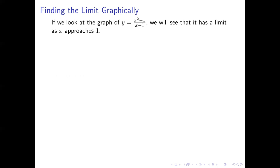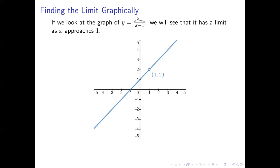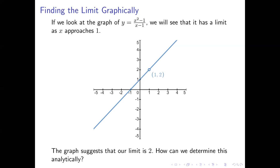Let's take a look at that limit graphically. The function is y equals x squared minus 1 over x minus 1, and we want the limit as x approaches 1. There's the graph — notice that the point 1, 2 is not on the graph because the function is undefined when x equals 1. But as we get closer and closer to where x equals 1, the y coordinates are getting closer and closer to 2. So from the graph, we can predict that our limit value is 2. The question is, how can we figure that out without using a graph, since substitution didn't work?